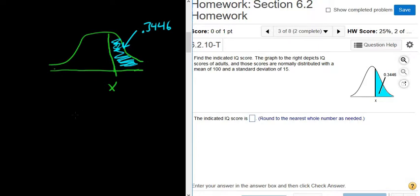So because it's shaded to the right, this is the probability that x is greater than or equal to. And we have to figure out what goes here. This is the x that goes here. And that's equal to 0.3446. That's the area or probability.